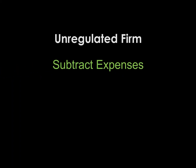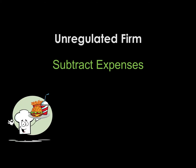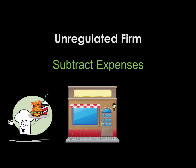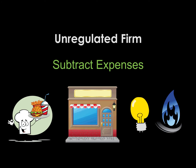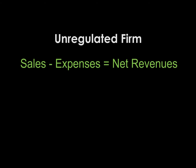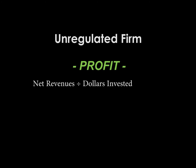You subtract your expenses — that would be your labor expenses, your rent on the building, your electric and gas costs — and after you do both of those, you get your net revenues. In order to determine how much profit McDonald's made, you would take your net revenues and divide it by the dollars that you've invested.